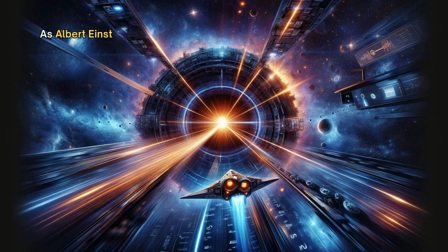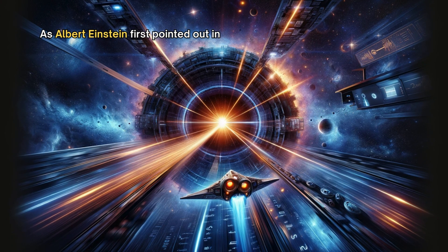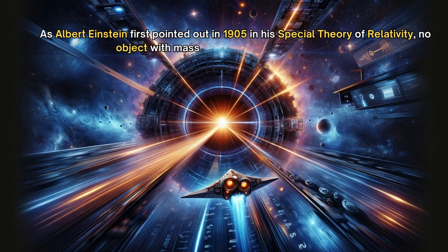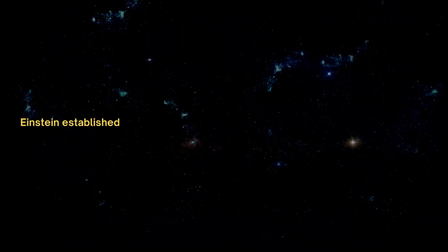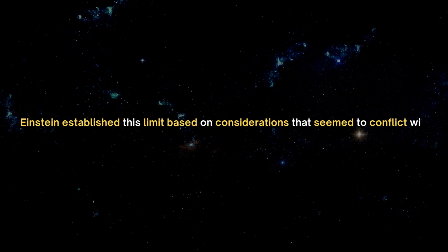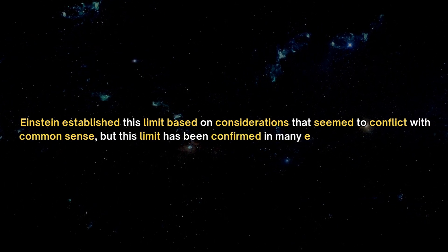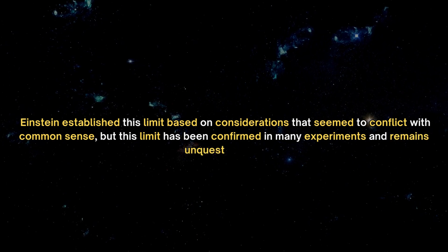As Albert Einstein first pointed out in 1905 in his Special Theory of Relativity, no object with mass can exceed the speed of light. Einstein established this limit based on considerations that seem to conflict with common sense, but this limit has been confirmed in many experiments and remains unquestionable.